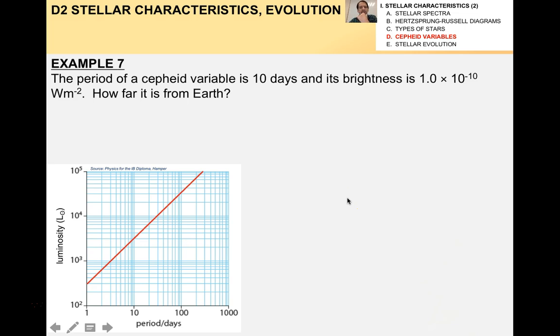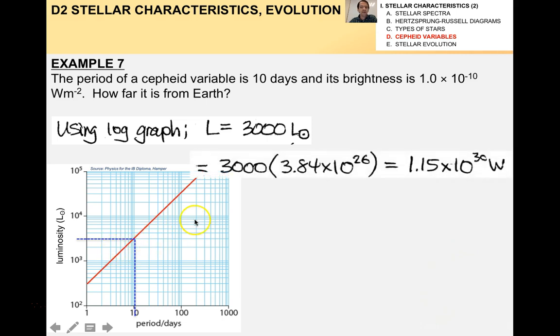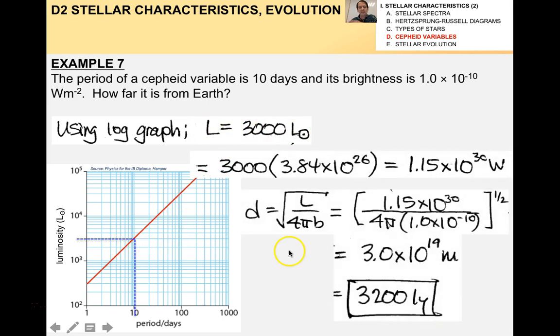How about this one? The period of a Cepheid variable is 10 days, and its brightness is 1 times 10 to the minus 10 watts per square meter. How far is it from Earth? Using the log graph, you get that L is about 3,000 solar luminosities, and then D equals 3,200 light years. It is this kind of example right here that you will see in the IB, not the one dealing with magnitudes.